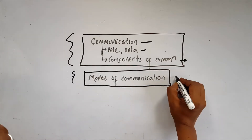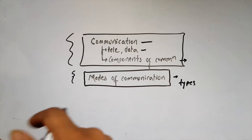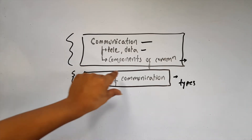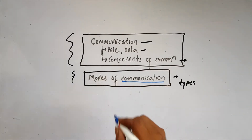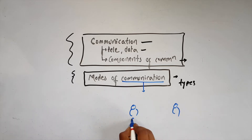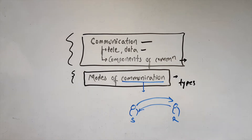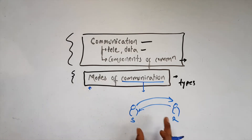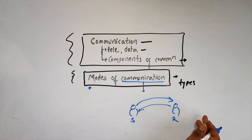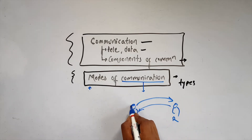It is important to know the modes of communication and the types of communication. We have to revise communication from last time — we need to know about the sender and receiver, and we need to exchange information to and from. We need to understand the different modes of how data is transferred from sender to receiver.